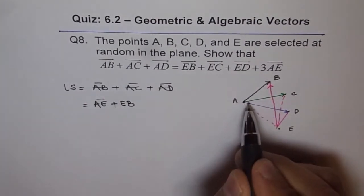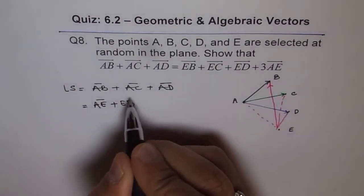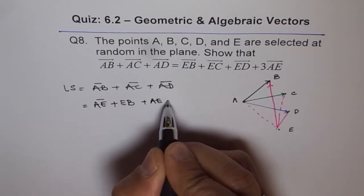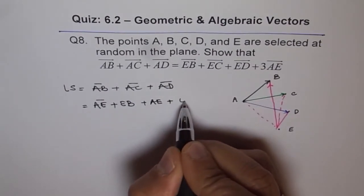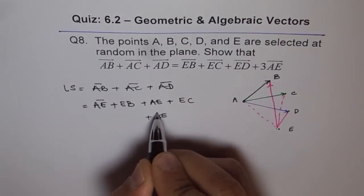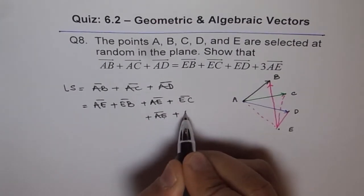Similarly, AC can be written as AE plus EC. And AD can be written as AE plus ED.